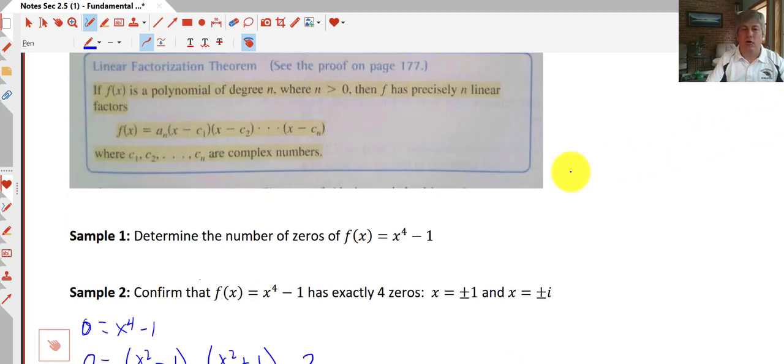Our first sample here, determine the number of zeros of x to the fourth minus one. Since we have a polynomial of degree four, we know that we have four zeros in the complex system. We don't know how many real ones we'll have, but we know we'll have four complex ones.